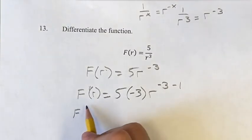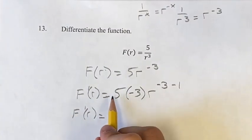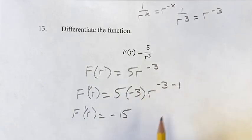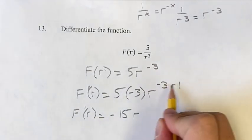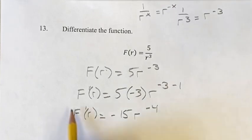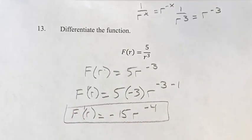Now this is something we can simplify pretty easily. f prime of r is equal to 5 times negative 3 is negative 15, r to the negative 3 minus 1 is negative 4. This is going to be your final answer. As always, thank you for liking and subscribing, and I'll see you in the next video.